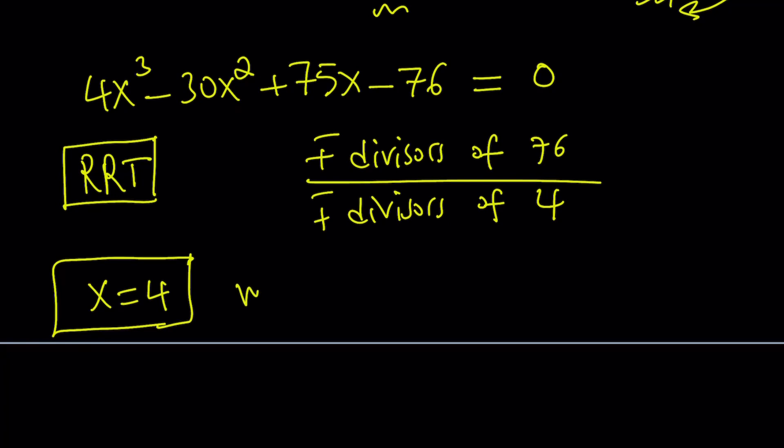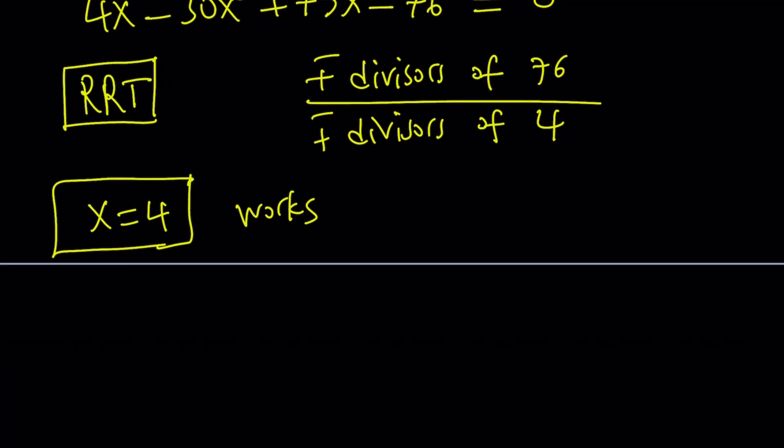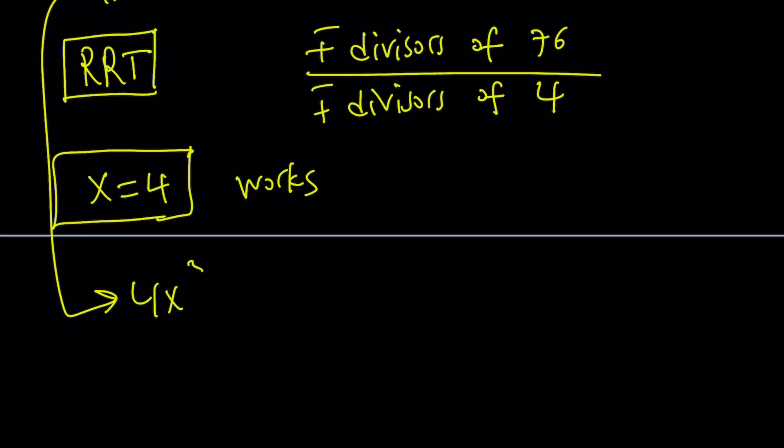Awesome. It's not too hard to find. Just got to keep trying. So since x equals 4 works, we can go ahead and do the long division or the manipulation or whatever you want to call it, synthetic division, artificial division, whatever. You can go ahead and divide this polynomial 4x cubed minus 30x squared plus 75x minus 76 by x minus 4. And that's going to give you another polynomial, which is 4x squared minus 14x plus 19.